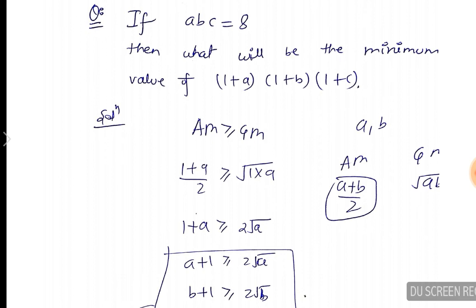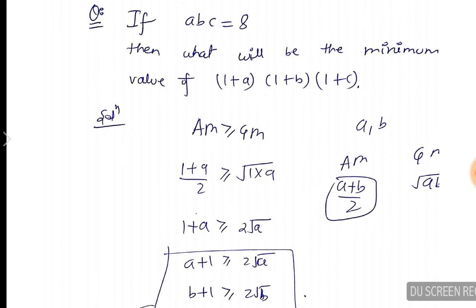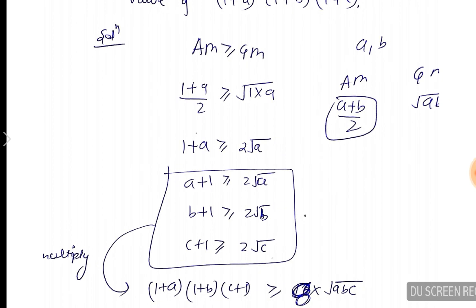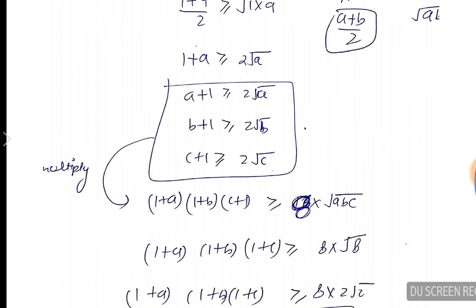Similarly, B+1 is greater than equal to 2√B and C+1 is greater than equal to 2√C. Any doubt here?